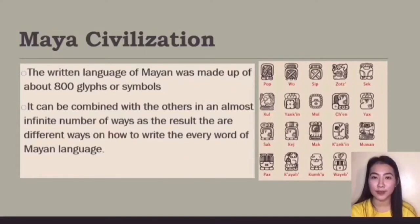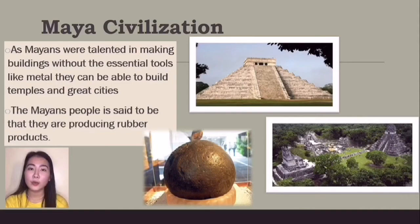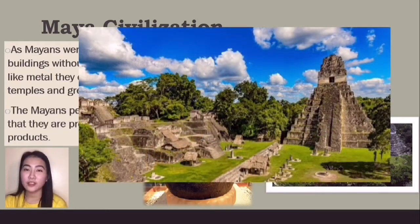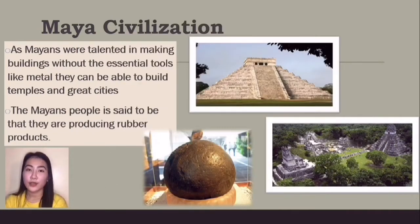The written language of the Maya was made up of about 800 glyphs or symbols that could be combined with others in an almost infinite number of ways, resulting in different ways to write every word of the Mayan language. As the Maya were talented in making buildings without the use of metal tools, they were able to build temples and great structures. The Mayan people are also noted for producing rubber products.